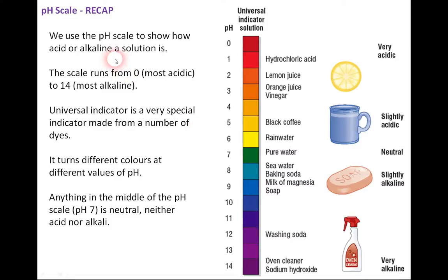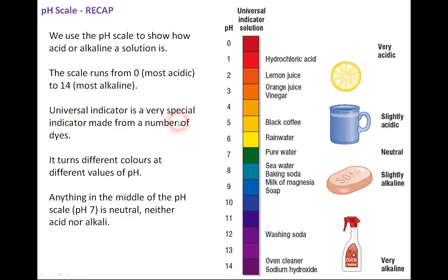More than likely you've done the pH scale before, to show how acid or alkaline a solution is. The scale runs from zero — most acidic — to 14, which is most alkaline. Universal indicator is a very special indicator made from a number of dyes and complex chemicals, and it turns different colours at different values of pH.